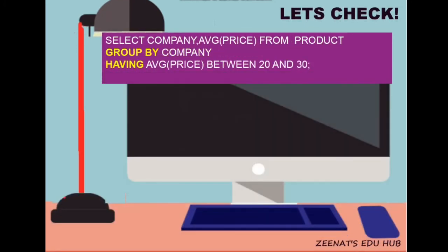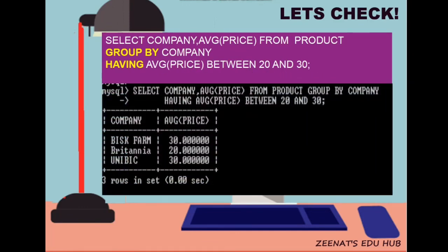The last query is: SELECT company, AVG(price) FROM product GROUP BY company HAVING AVG(price) BETWEEN 20 AND 30. You can see that only three records are displayed, as there are three companies whose products' average price falls between 20 and 30.